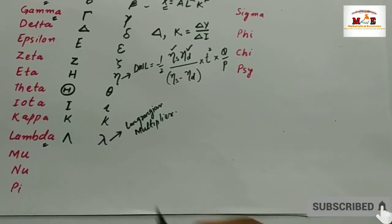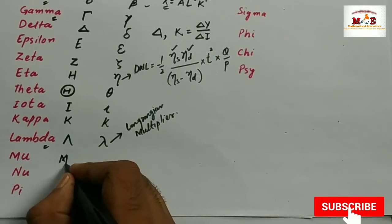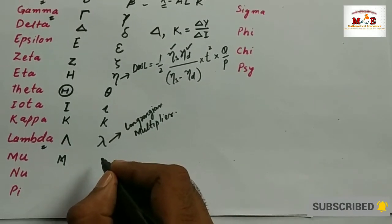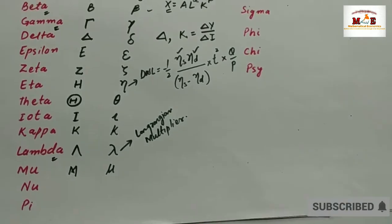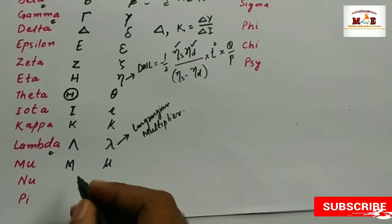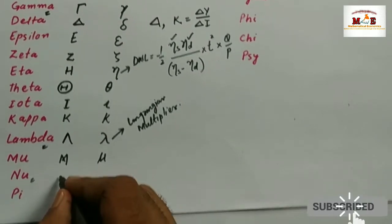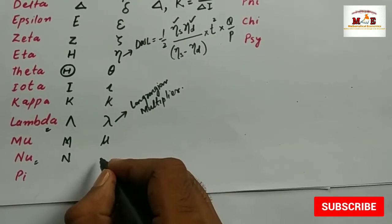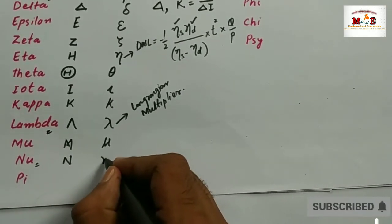Then there is mu. Its uppercase is like capital M, and lowercase is written like this. And this is nu — its uppercase is like this and its lowercase is like this.